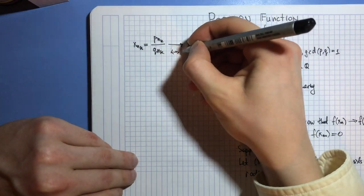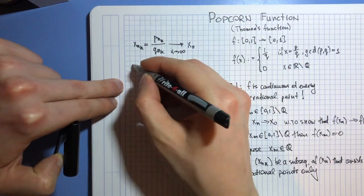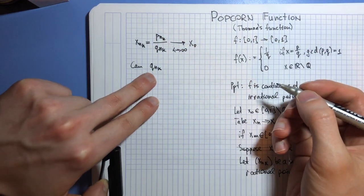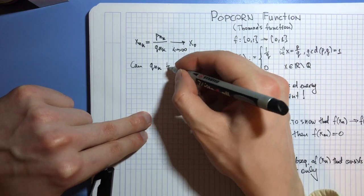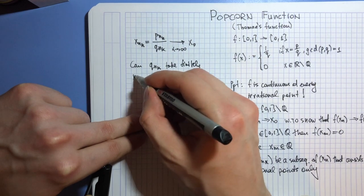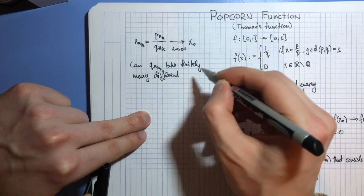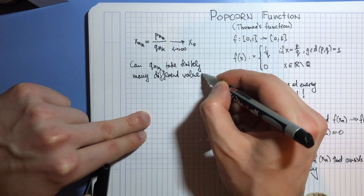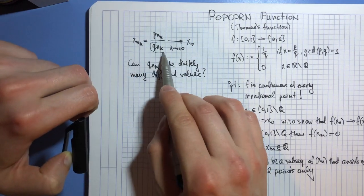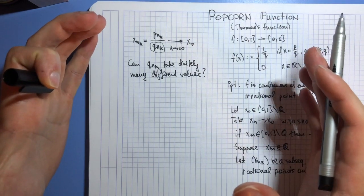This converges as k tends to infinity, and here's the question: Can these denominators qₙₖ take finitely many different values? As we approach x₀, can this number be chosen only out of a finite number of points?